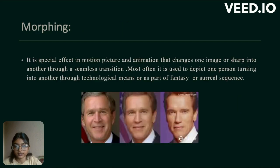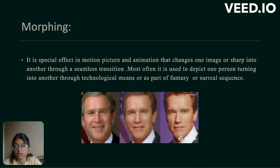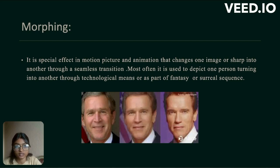Next is morphing. It is a special effect in motion pictures and animation that changes an image or shape into another through a seamless transition. Most often it is used to depict one person turning into another through technological means, or as part of a fantasy or surreal sequence.